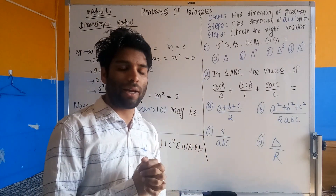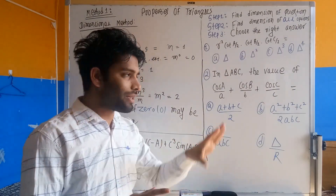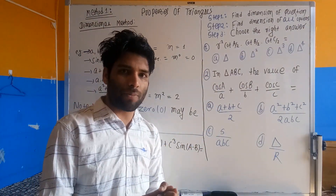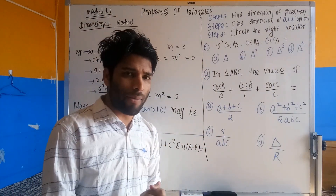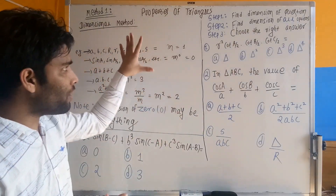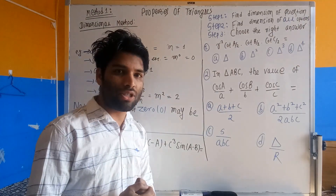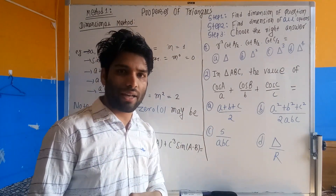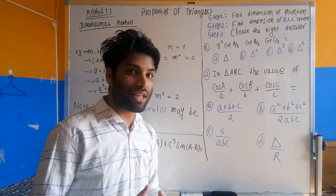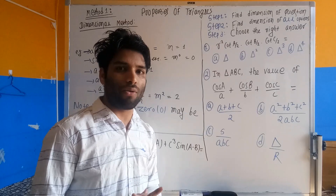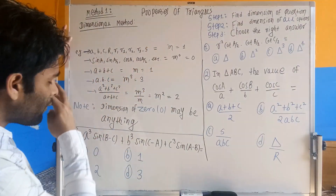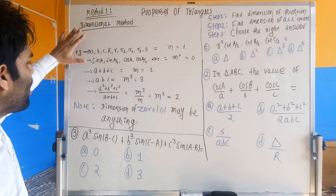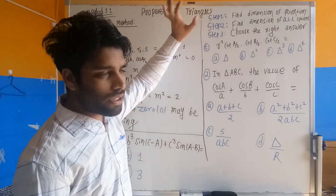The best approach could not process how to solve the problem. If you have a question, you can use a question. You can easily use a question to get an answer. Okay, let's start with the dimensional method. What we did in the dimensional method is that we are going to answer these three steps.